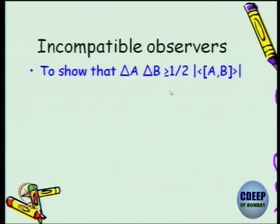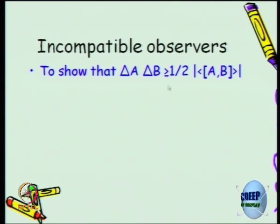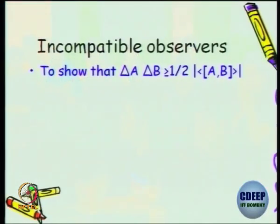Only when they are incompatible do you have this problem: the product of the two standard deviations or two uncertainties has a bound which is determined by the commutator bracket, and this is what you need to prove. Let me just briefly recap on the slide the solution for those who have not tried this, but you can go back and rework things — I am not putting all the steps, but the essential steps are present.